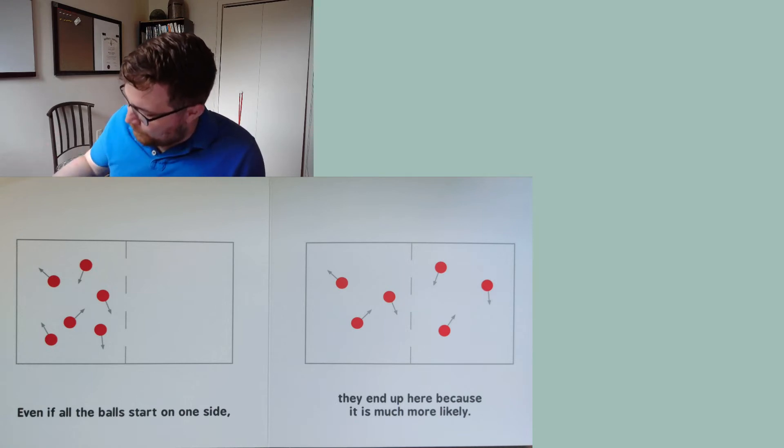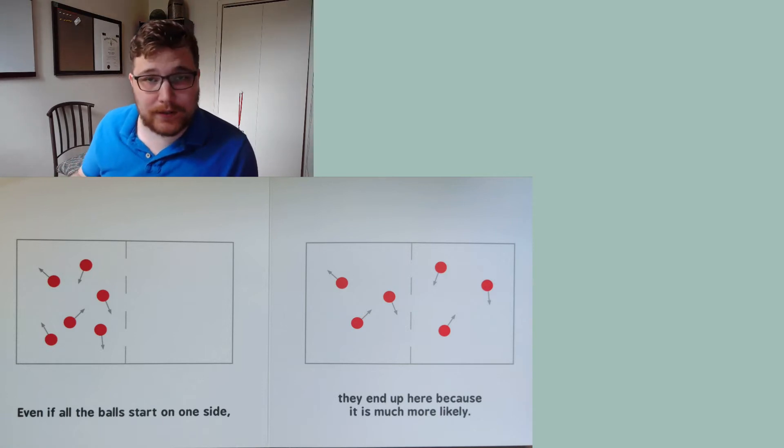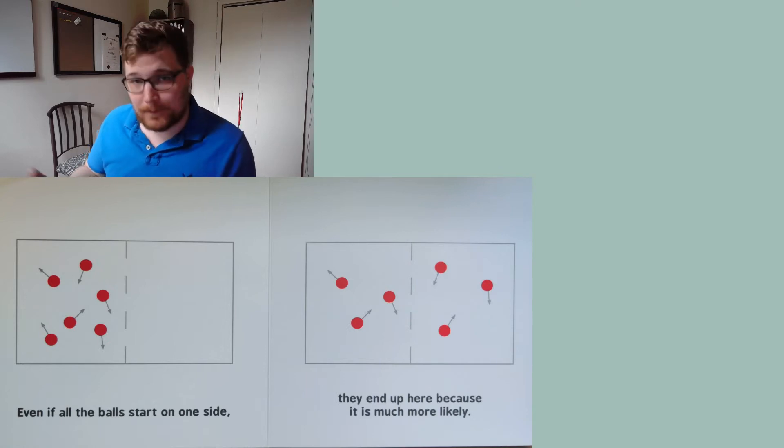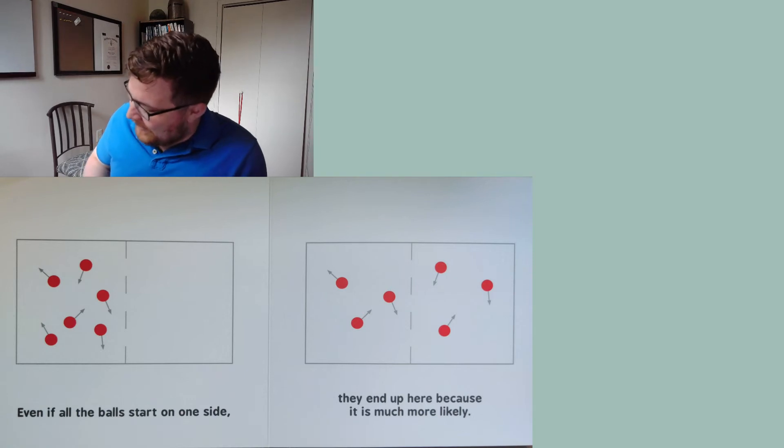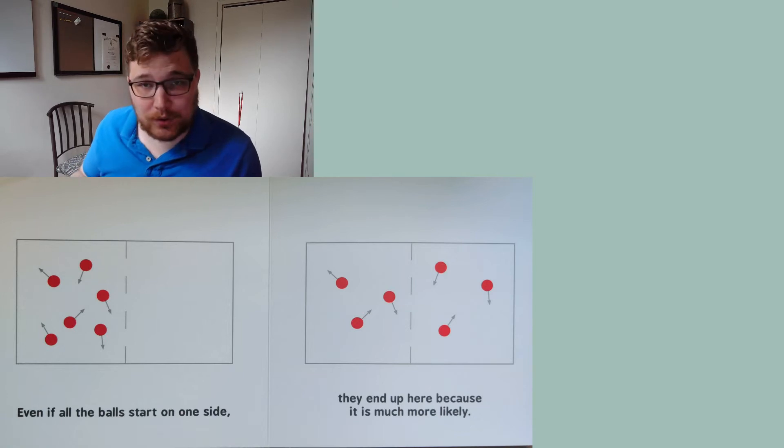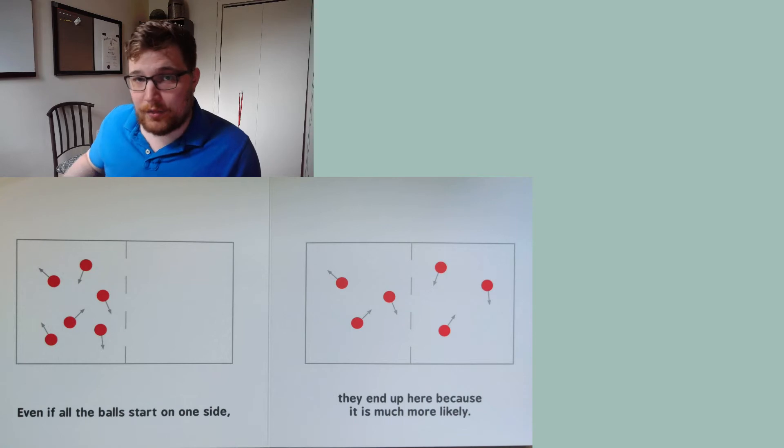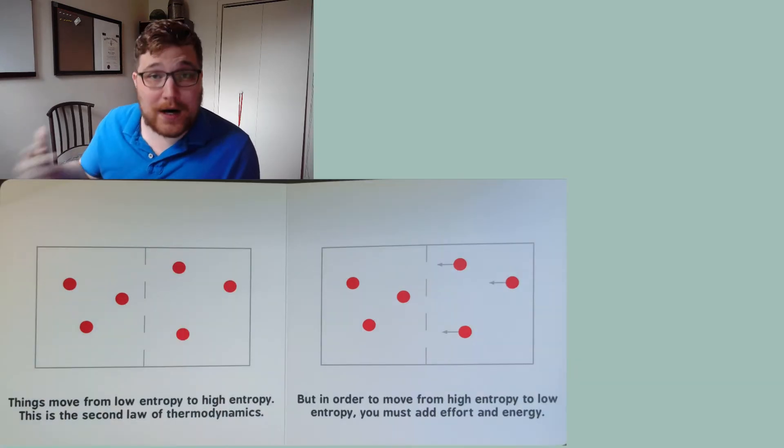So even if all of the balls start on one side, they end up here with three balls on either side because it is much more likely. And so when I at the beginning when I was saying that all the balls being on the left side being atypical, that's because there are few ways to do that as this baby's book has taught us. And when we go to a more typical configuration, I call it typical because there are just many more ways to organize your particles in such a way that three are on the left and three are on the right.